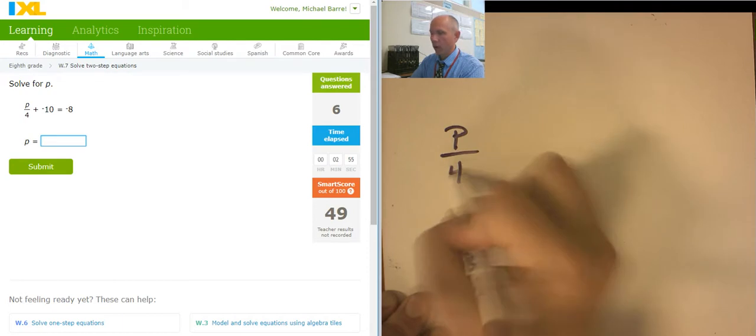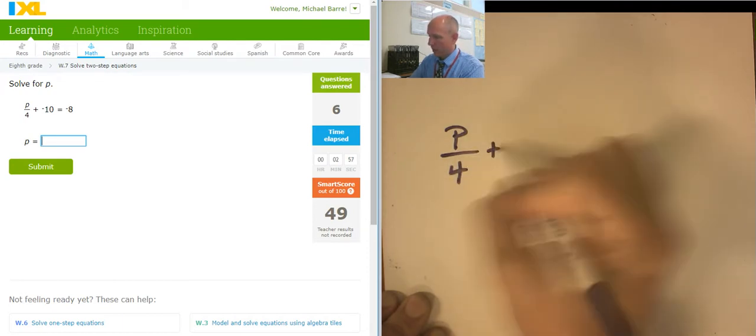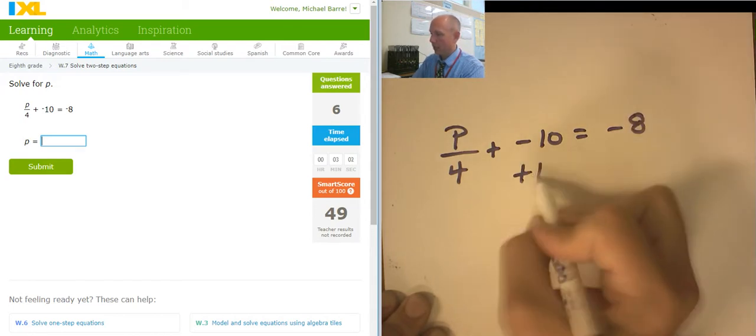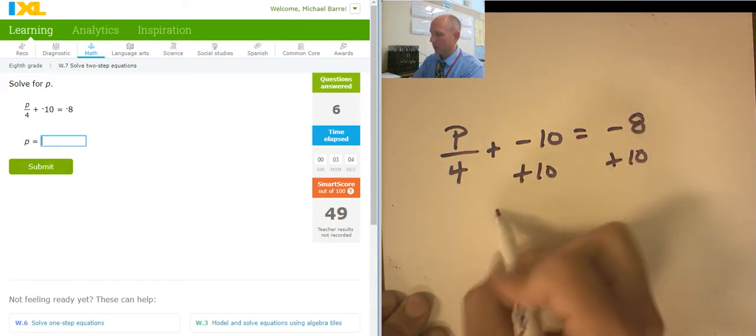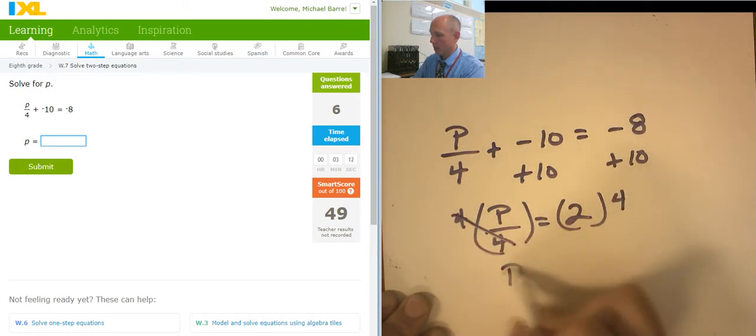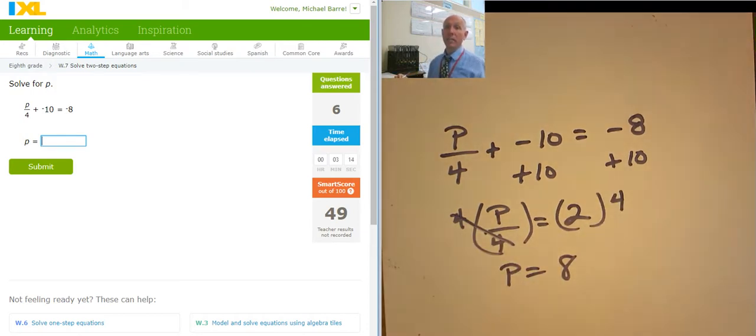p over 4 plus negative 10 equals negative 8. I would like to add 10 to both sides. So now I would like to multiply both sides by 4. p equals 8. Let's see. What does it mean to be a solution? If I plug it in, it will work. Let's plug it in.